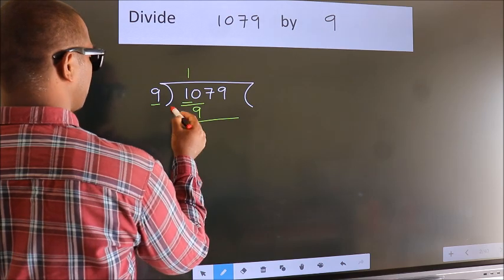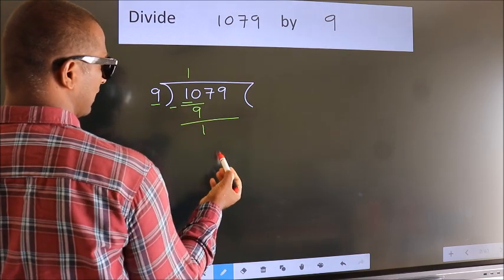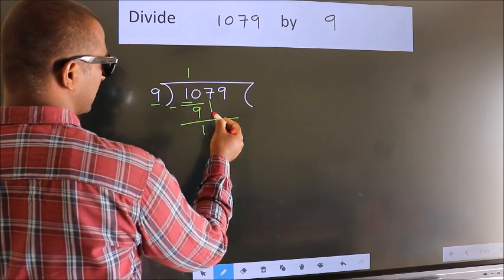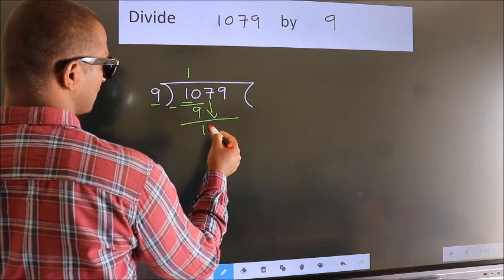Now we should subtract. We get 1. After this, bring down the beside number. So, 7 down.